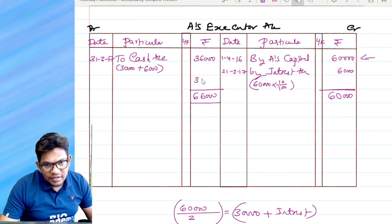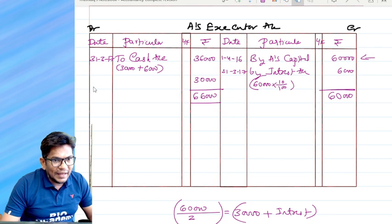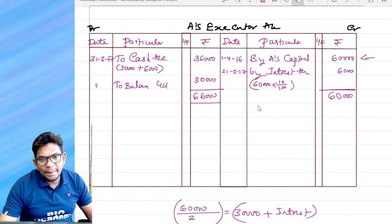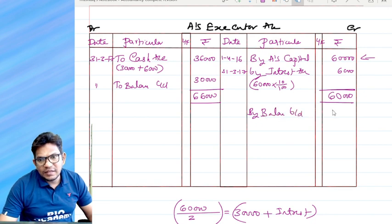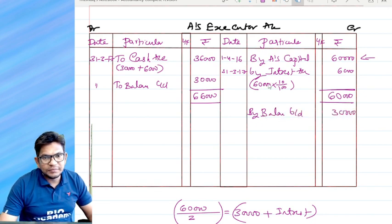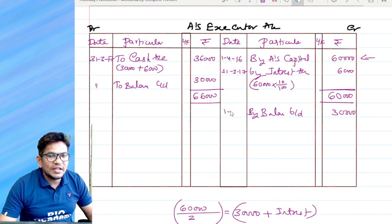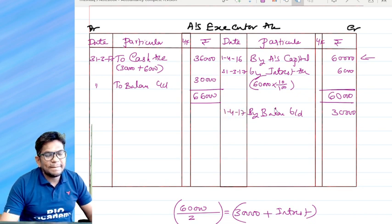So guys, here we have 66,000. You just bring it here, 66,000, and minus it. What is left? 30,000 is the left balance amount. What we do? Balance carried down, by balance brought down, 30,000. It is the next year, 1-4-17.